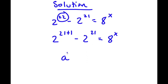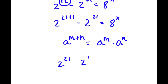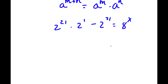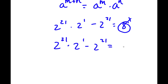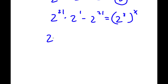If I have something in the form a to the power of m plus n, this equals a to the power of m times a to the power of n. So 2 to the power of 21 plus 1 can be rewritten as 2 to the power of 21 times 2 to the power of 1, and I still have minus 2 to the power of 21 equal to 8 to the power of x. Now 8 is the same as 2 to the power of 3, so I have 2 to the power of 21 times 2 to the power of 1 minus 2 to the power of 21 equal to 2 to the power of 3, all to the power of x. Factoring out 2 to the power of 21 from the left side gives 2 to the power of 21 times the quantity 2 to the power of 1 minus 1.